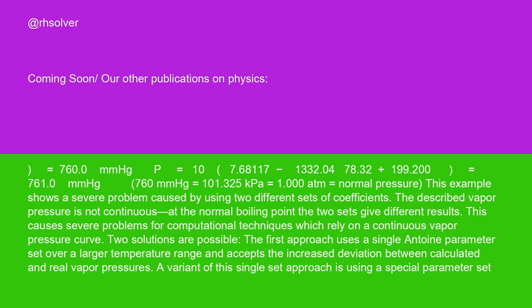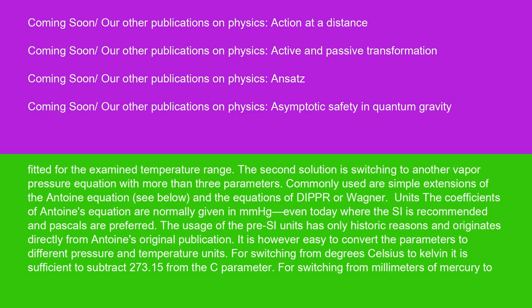A variant of this single set approach is using a special parameter set fitted for the examined temperature range. The second solution is switching to another vapor pressure equation with more than three parameters. Commonly used are simple extensions of the Antoine equation, see below, and the equations of DIPPR or Wagner.